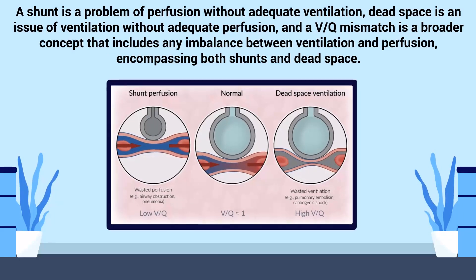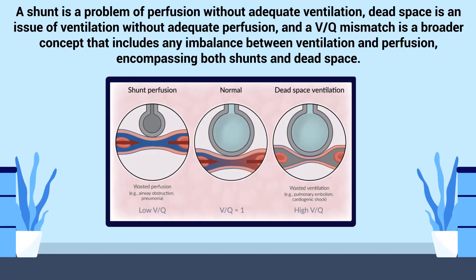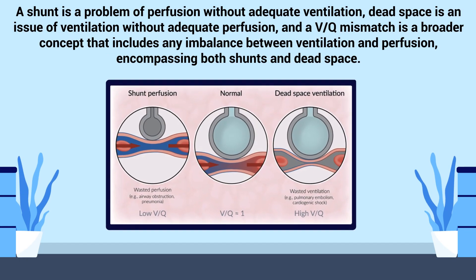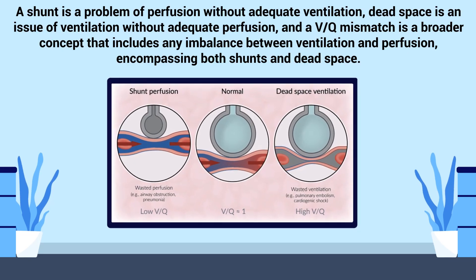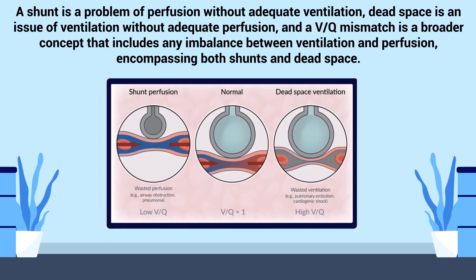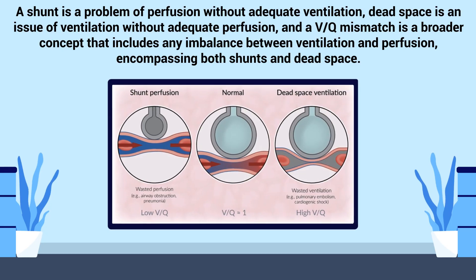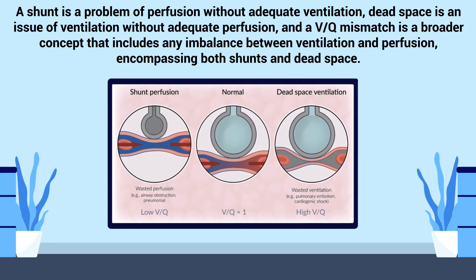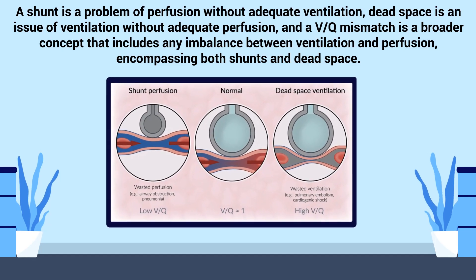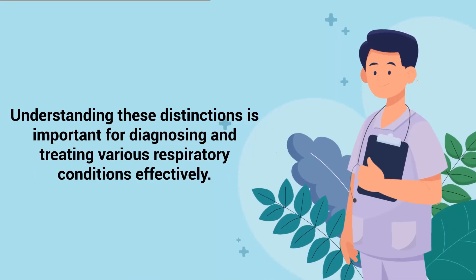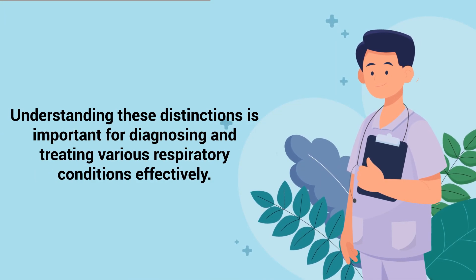A shunt is a problem of perfusion without adequate ventilation, dead space is an issue of ventilation without adequate perfusion, and a VQ mismatch is a broader concept that includes any imbalance between ventilation and perfusion, encompassing both shunts and dead space. Understanding these distinctions is important for diagnosing and treating various respiratory conditions effectively.